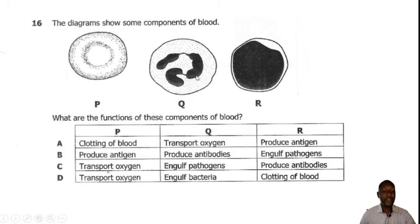Question 16. The diagram shows some components of blood labeled P, Q and R. What are the functions of these components of blood? P is the red blood cell and the function of the red blood cell is to transport oxygen. Q is a phagocyte because this one has a lobed nucleus and its function is to engulf pathogens. And R is a lymphocyte due to the presence of the large nucleus and thin cytoplasm, and its job is to produce antibodies. So the correct answer is C.